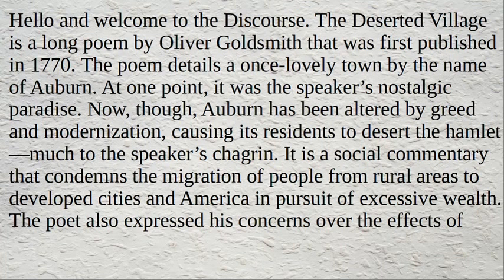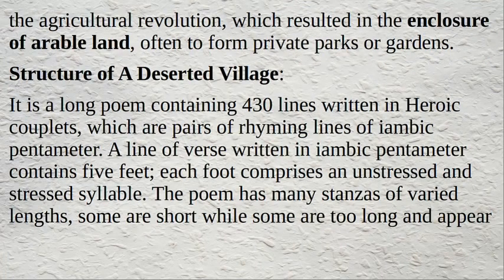Hello and welcome to the discourse. The Deserted Village is a long poem by Oliver Goldsmith that was first published in 1770. The poem details a once lovely town by the name of Auburn, which was at one point the speaker's nostalgic paradise. Auburn has since been altered by greed and modernization, causing its residents to desert the hamlet. It is a social commentary that condemns the migration of people from rural areas to developed cities and America in pursuit of excessive wealth. The poet also expressed his concerns over the effects of the agricultural revolution, which resulted in the enclosure of arable land often to form private parks or gardens.